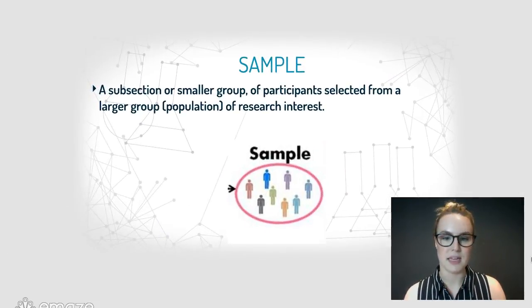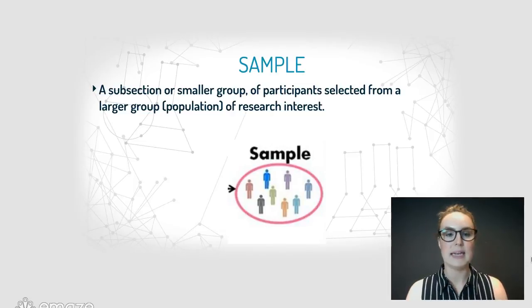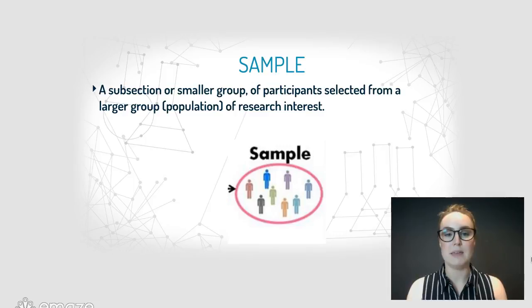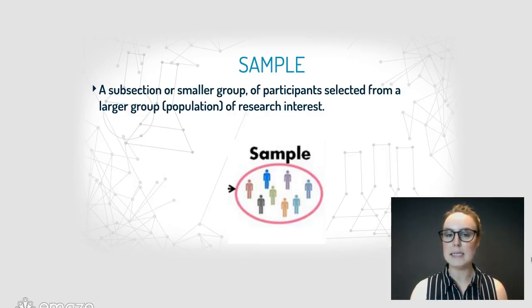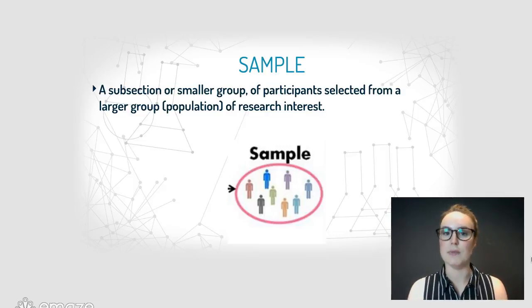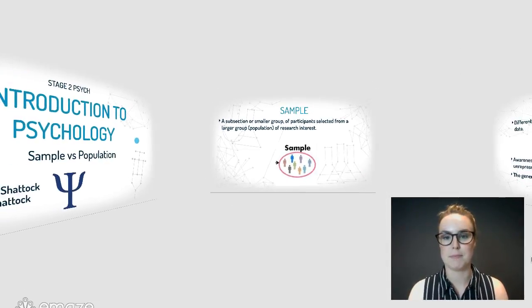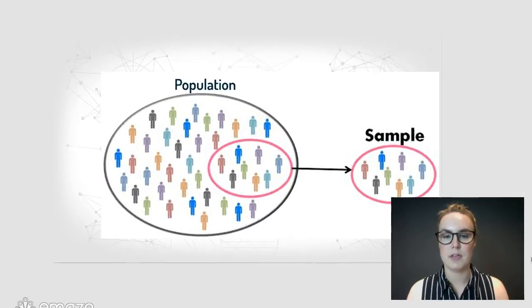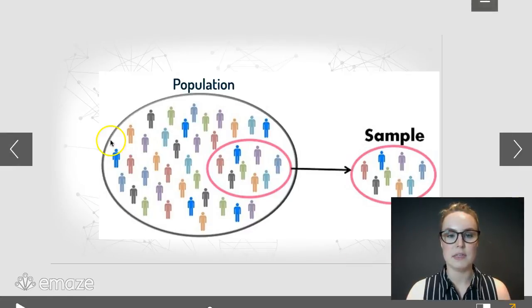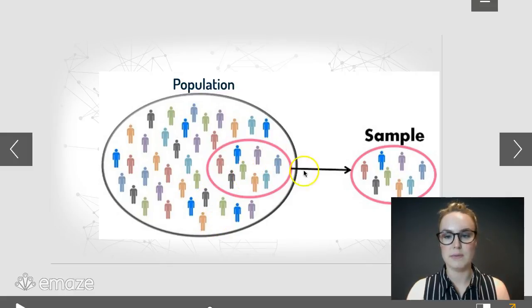Our sample, on the other hand, is much smaller — it's a subsection of people from that population. So you've got this massive population; let's pretend that it's all teenagers in Adelaide, and you're going to get a sample of teenagers in Adelaide to use in your research study. You can see here that you've got this large population, and we're going to use a small sample of them.